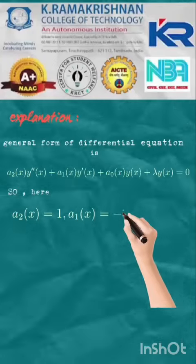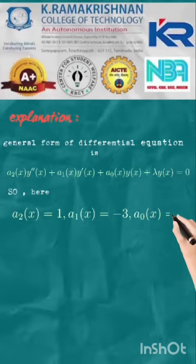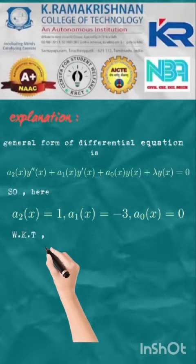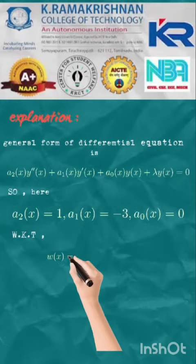So here, a2 of x is equal to 1, a1 of x is equal to minus 3, and a0 of x is equal to 0.